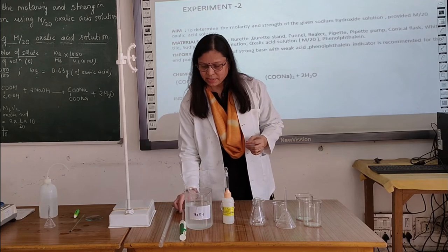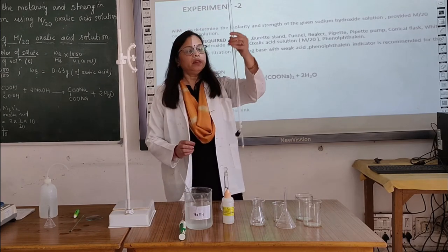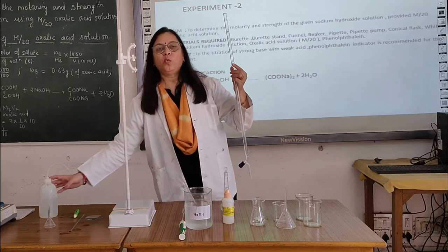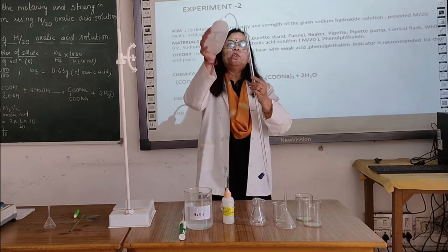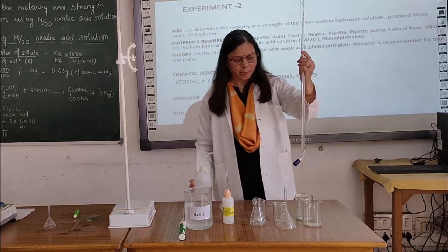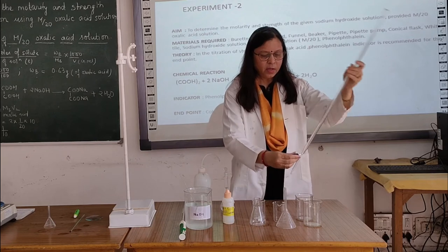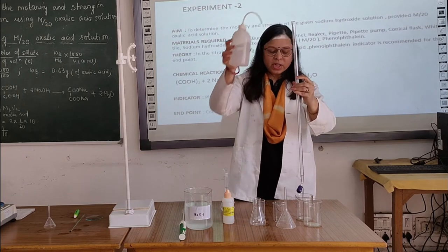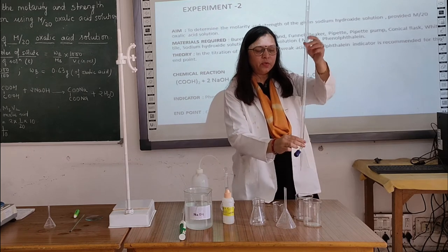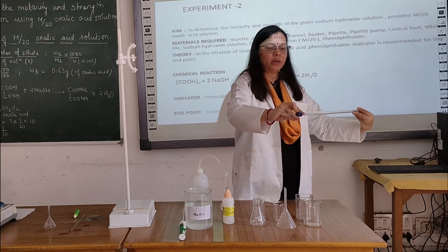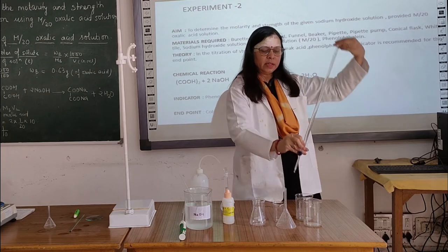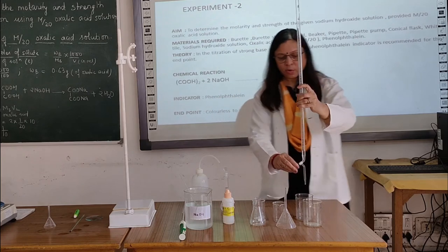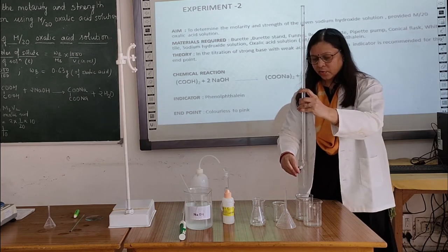First of all, all the apparatus should be thoroughly washed with distilled water. Let us wash the burette — these are already washed but I am showing again how to wash and rinse it. Adding a small amount of water and shaking it thoroughly throughout the burette so that all impurities are washed away. This is the stopcock — open this stopcock and drain out the washes.